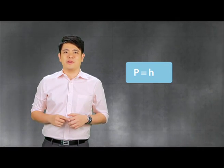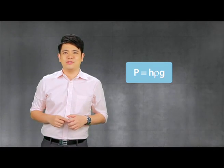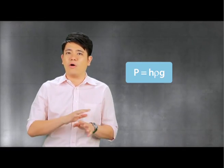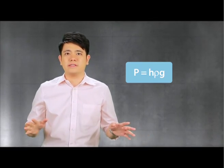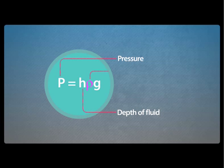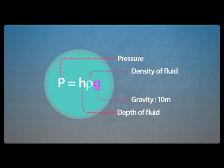A very important formula is P equals H rho G. This formula is specifically for pressure in fluids — liquids and gases are all fluids. P represents pressure, H is the depth of fluid, rho is the density of fluid, and G is gravity. Gravity is a constant; it is always 10. It is not given in the exam, so make sure you remember it.